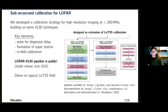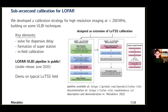The second thing we need is a specialized calibration strategy, and we've developed one for high-resolution imaging at less than 200 MHz. It was designed as an extension of the LoTSS calibration. Key elements include solving for a dispersive delay and combining all core stations into a super-station, which gives a very sensitive station at the center of the array to help with calibration. We do in-field calibration on LBCS calibrators. This pipeline is completely public and available on GitHub. We've demonstrated this on a typical LoTSS field, described in a paper that will come out next year.